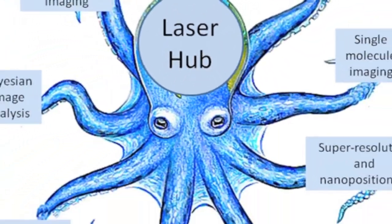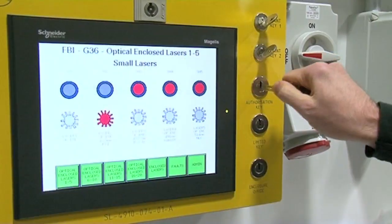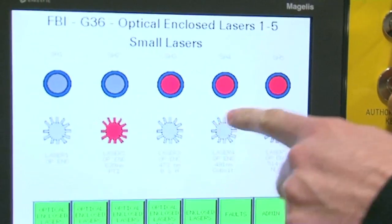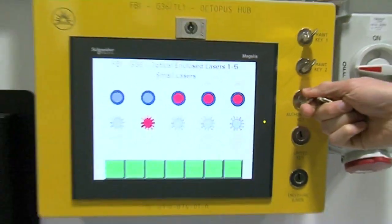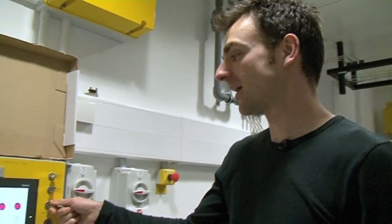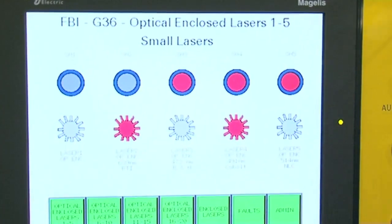So to turn on the lasers in our octopus head, I need to put my key in here, turn it, and press there. And that is the alarm sounding and the blue laser is now on.